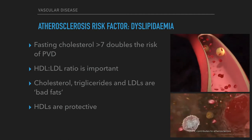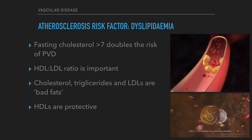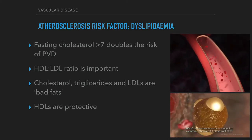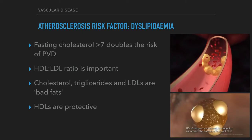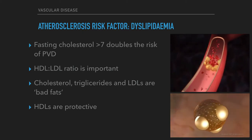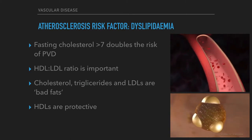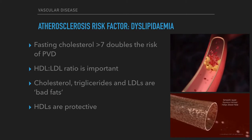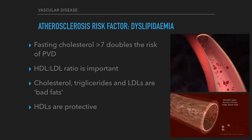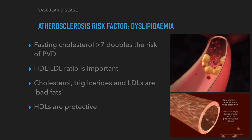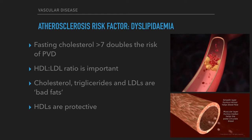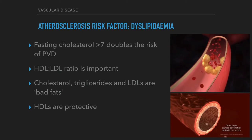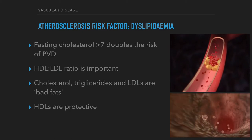The Framingham Heart Study in Massachusetts, which commenced in 1948, is a very well-known ongoing longitudinal study that provided much of the basis for what we now know about risk factors for atherosclerotic disease. In this study, a fasting cholesterol of 7 doubled the risk of claudication. However, the story is slightly more complicated than this because the ratio of HDL to LDL cholesterol is also important — the higher this ratio, the lower the risk. Cholesterol, triglycerides, and LDLs, the bad fats, are known to have a detrimental impact on plaque formation, whereas HDLs are known to have a protective effect.